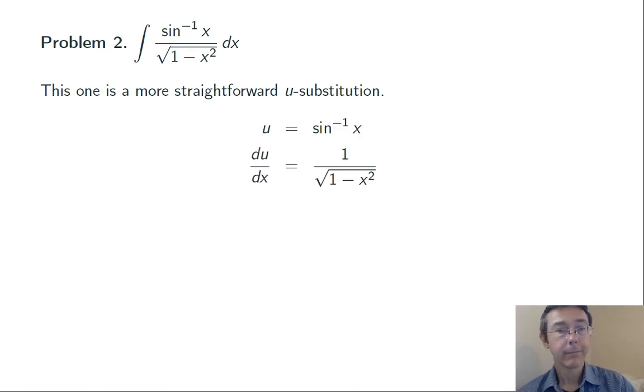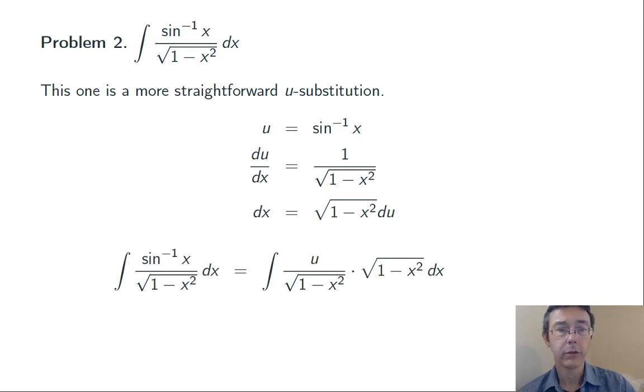So let's do it. Let's differentiate, solve for dx, and then plug into the original integral. We take out the sine inverse of x, put in u, take out the dx, put in the square root of 1 minus x squared du. And we see we have a cancellation. Those square roots are going to kill one another and I'm just left with the integral of u du.